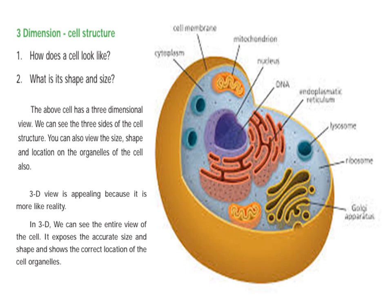As you can see on paper, it is flat. This is the 3D structure — we can see the 3D structure, and we can see the cell structure. We can also view the size, shape, and location of the organelles of the cells.